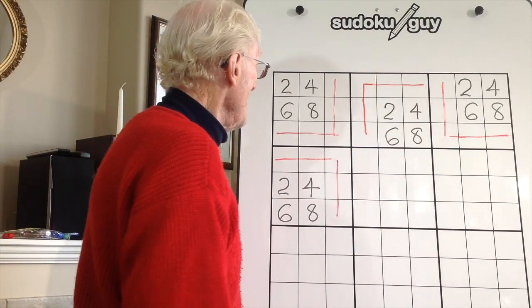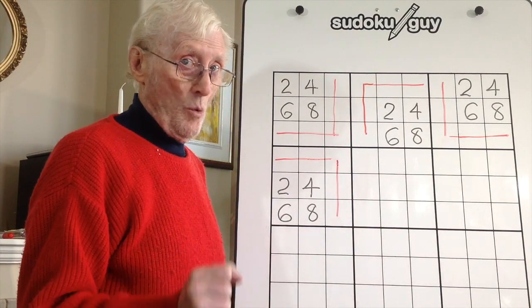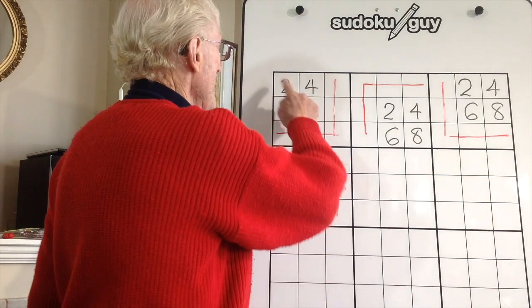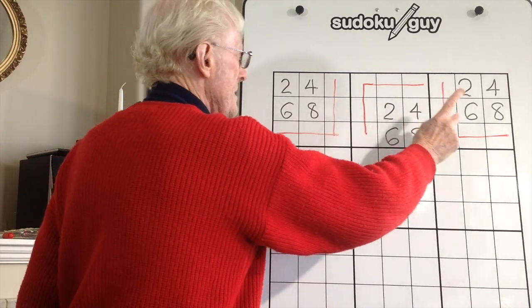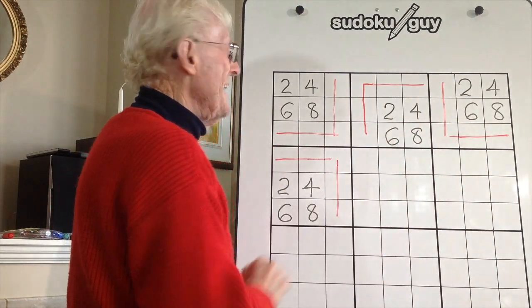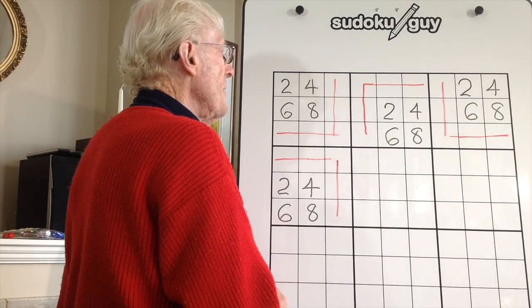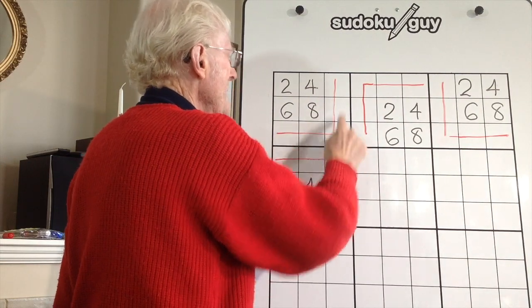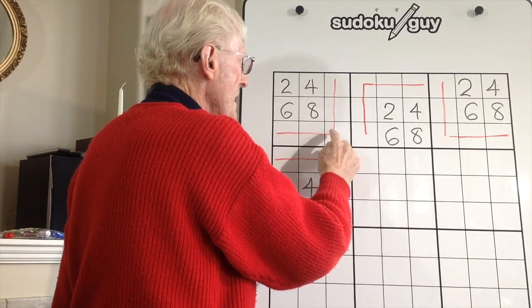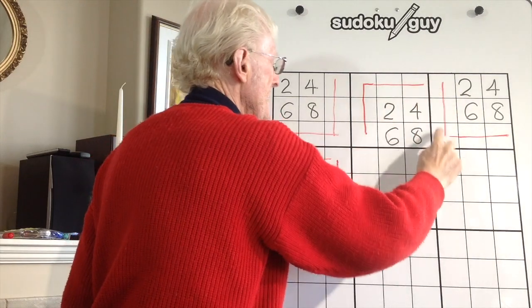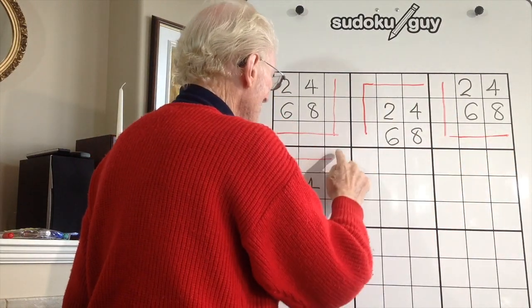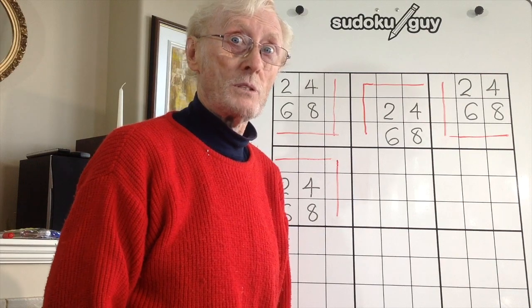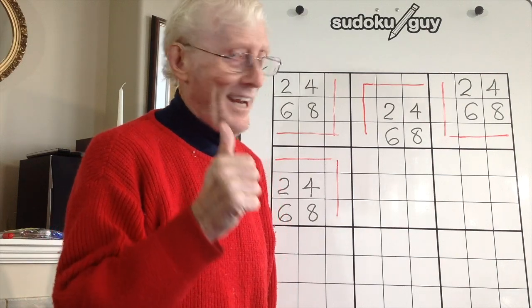Here we have four examples of what I mean when I say a square within a block — this one, this one, this one, and this one. In every case, each of them has three cells that are empty, either vertically or horizontally. You may ask: what's that got to do with getting new numbers and solving a puzzle? Hang tight, I'll be right back to show you these in a real puzzle.